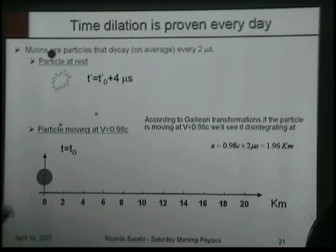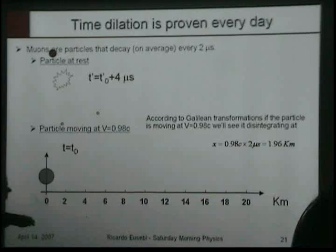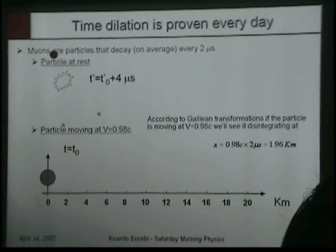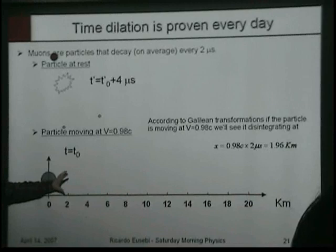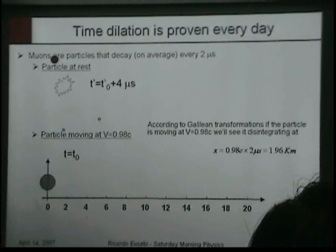And you have the same particle moving closer to the velocity of light. And you see the particle moving that way. And this is the x-axis. And again, you expect if the particle is moving at 98% of the velocity of light, and decays in two microseconds, you expect it travels two kilometers. So you expect this guy to come in here and to blow up in here. And it doesn't happen.